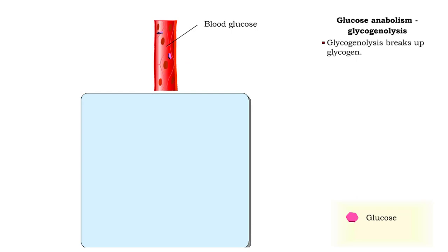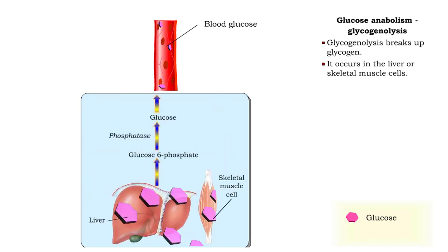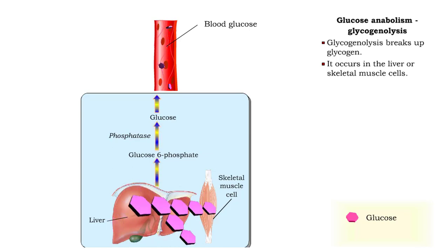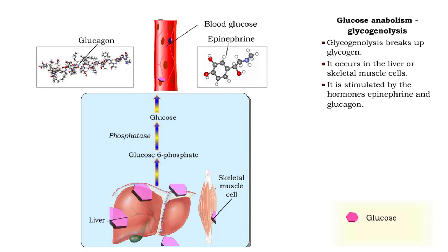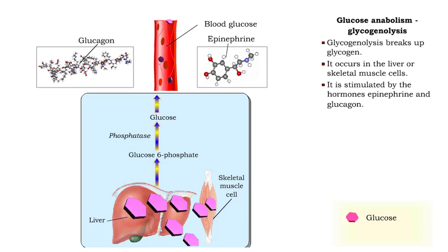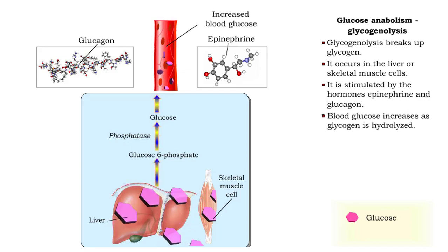Glycogenolysis is a process that breaks up glycogen and occurs in the liver or skeletal muscle cells. The hormones epinephrine and glucagon stimulate glycogenolysis. As the glycogen is hydrolyzed, blood glucose will increase and may be oxidized by the body cells to get energy.